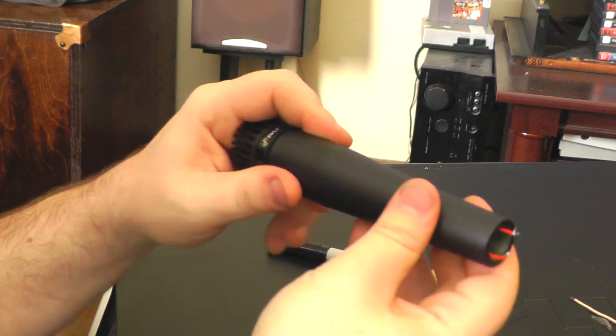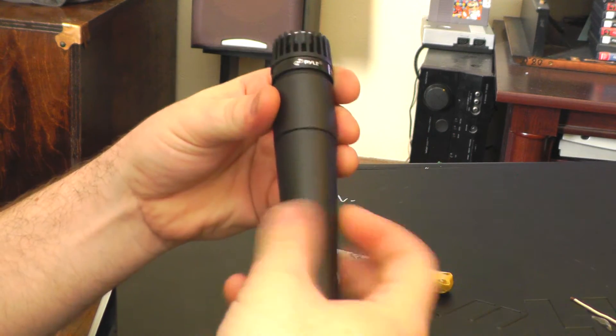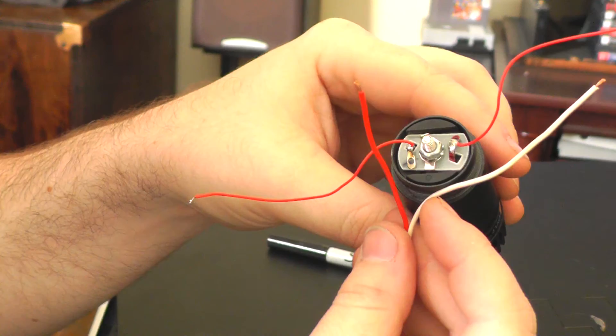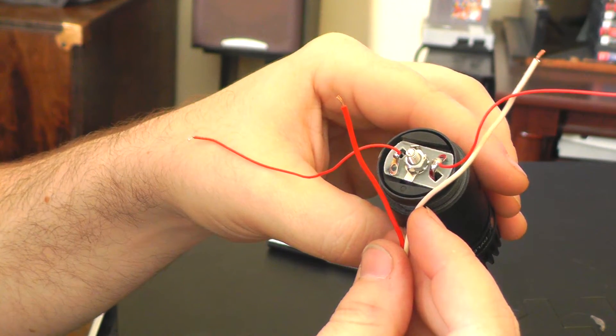Once you get that done, you can unscrew it and take a look at their wiring. There's no transformer in this microphone, which I found interesting. And again, you see the thickness difference in the wires.